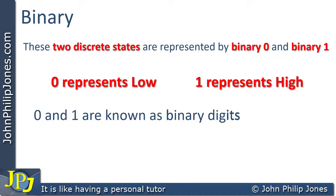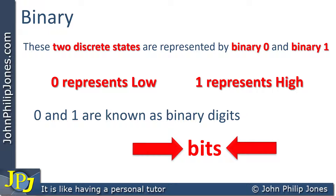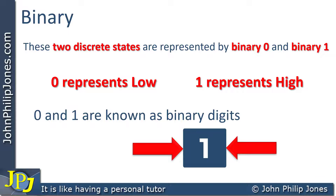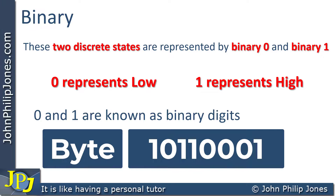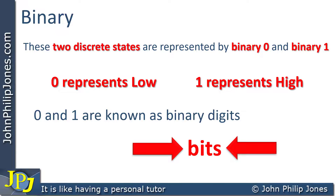Zero and one are known as binary digits. If you concentrate on binary digits for a moment and look at the B from binary and the ITS from digits and put them together, you can see that it spells bits. It's frequently the case that when we talk about computers and the binary patterns that exist within the computer, we refer to the bits of the binary — we say binary bits. So zero is an example of a binary bit, and one is an example of a binary bit. If you have eight bits together, that makes a byte. If you have four bits together, that makes a nibble.